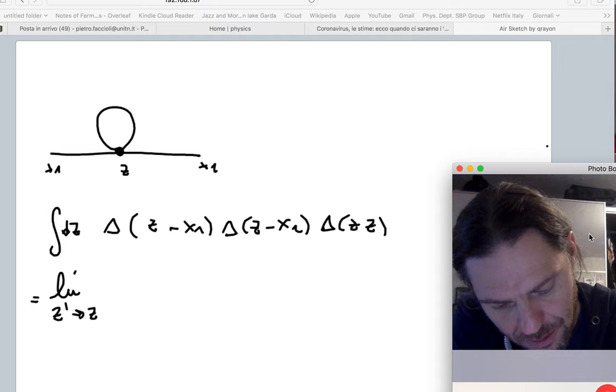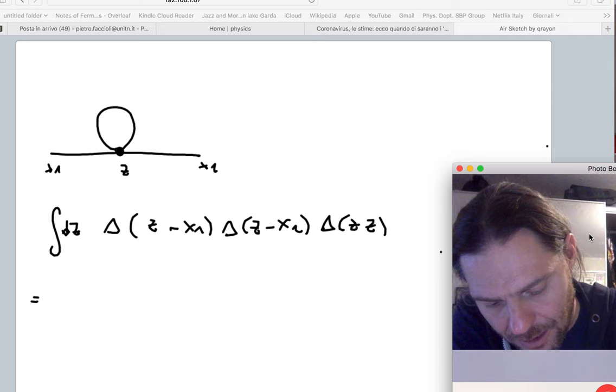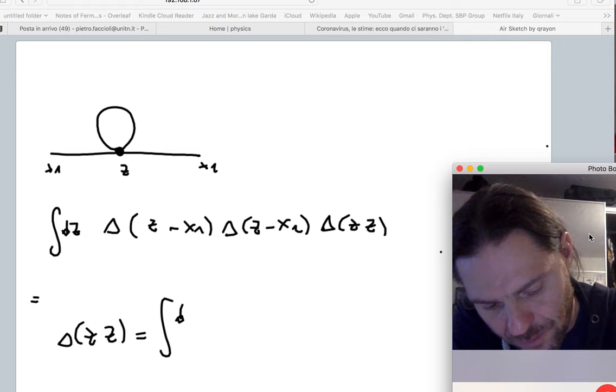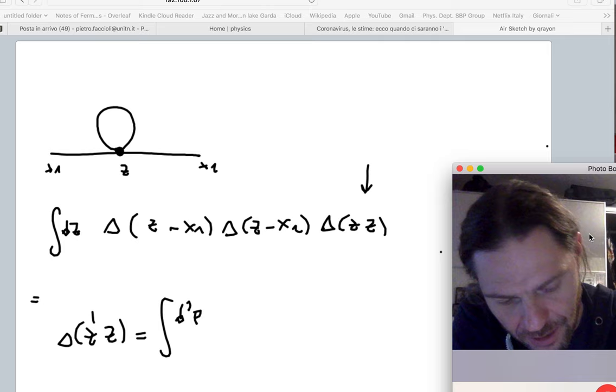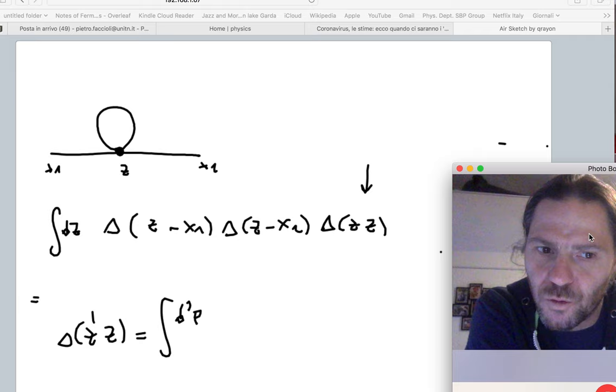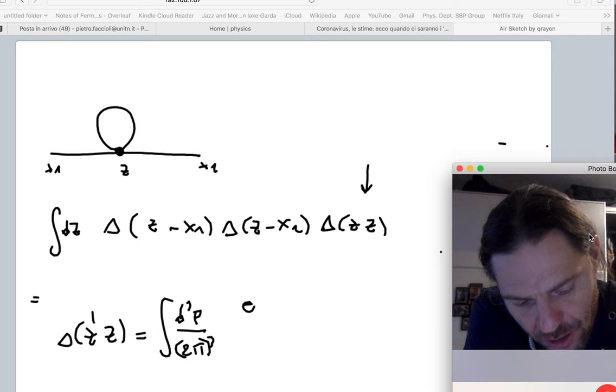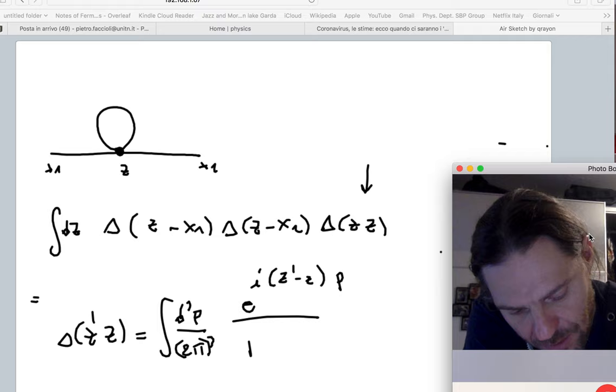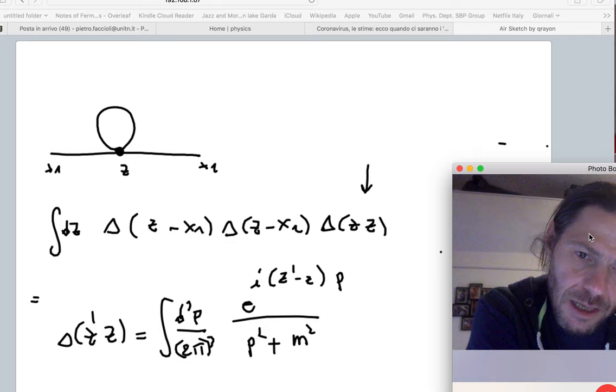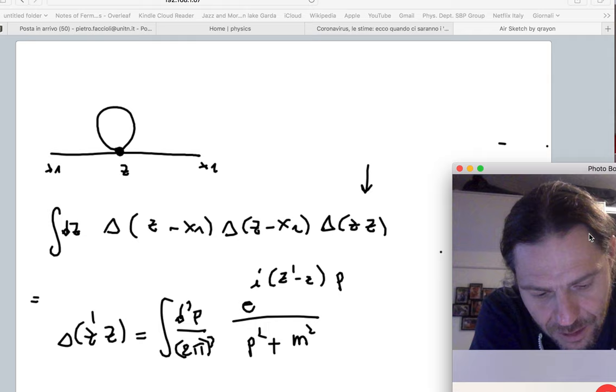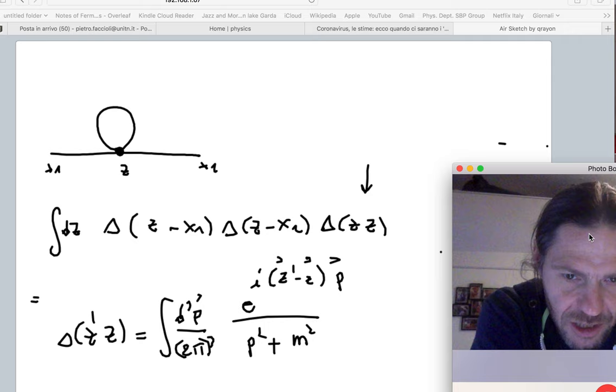To give an example, well, one thing you can do, you can put z prime and send it to z, or the best way to do it is to write delta of (z,z) as a momentum integral. Let me call it z prime minus z. This guy here, splitting the two points with the idea of sending them to the same point after I understand what's going on. So I get integral d³p over (2π)³ times e to the i(z' - z)·p divided by p² + m². Now this is a nice convergent integral anytime z prime is different from z, because it's a Yukawa integral that we have already seen. But when z prime is equal to z, this integral goes to...